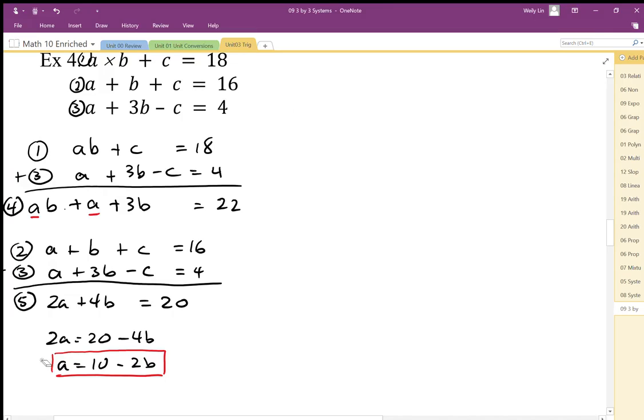Once I've established equation 5 as a equals 10 minus 2b, what I can do is get rid of a variable in equation 4 by substitution. And that allows me to have a one equation, one variable situation.